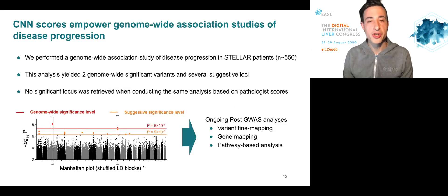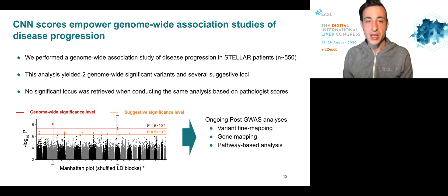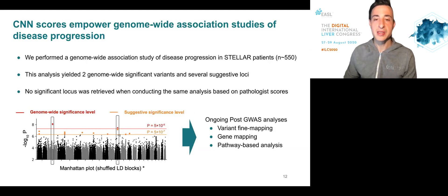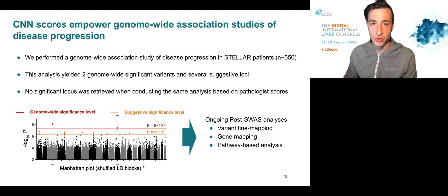We also performed a genome-wide association study of disease progression, defined using the continuous scores in Stellar patients. This analysis yielded two genome-wide significant variants and several suggestive loci. Importantly, no significant locus was retrieved when conducting the same analysis on the pathology scores rather than on the continuous scores.